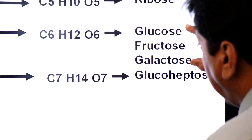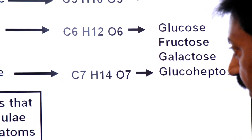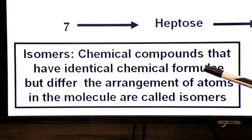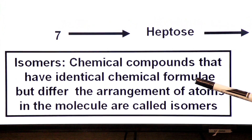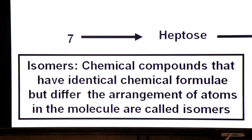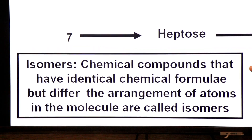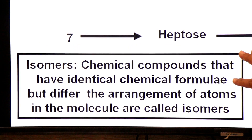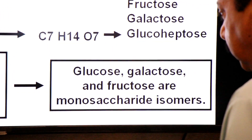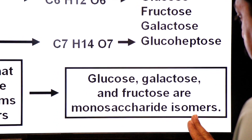Isomers are chemical compounds that have identical chemical formulae but differ in the arrangement of atoms in the molecule. So glucose, galactose, and fructose are monosaccharide isomers — same formula C6H12O6, different atomic arrangement.